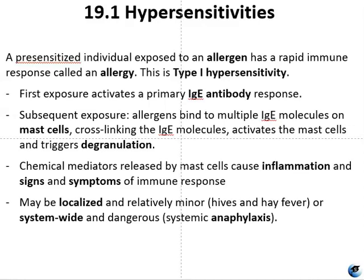Histamine stimulates mucous secretion in nasal passages and tear formation from lacrimal glands, promoting runny nose and watery eyes. Interaction of histamine with nerve endings causes itching and sneezing. Vasodilation caused by several chemical mediators results in hives, headaches, angioedema, and hypotension. Bronchial constriction leads to wheezing, difficulty breathing, coughing, and in very severe cases a bluish color to the skin or mucous membranes. Vomiting can result from stimulation of the vomiting center in the cerebellum by histamine and serotonin, and histamine can also cause relaxation of intestinal smooth muscles and diarrhea. Type 1 hypersensitivity reactions can be localized or systemic and quite dangerous.